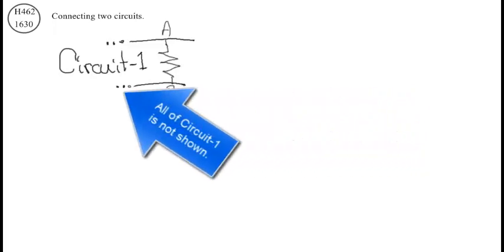Exercise 1630. Connecting two circuits. All of circuit one is not shown.